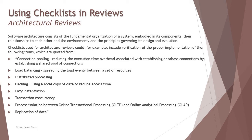Checklists used for architectural review could include verification of: connection pooling — reducing execution time overhead associated with establishing database connections by establishing a shared pool of connections, as connectivity issues are common between front end and back end; and load balancing — spreading the load evenly between a set of resources, which can be addressed from a performance point of view during architectural review itself.